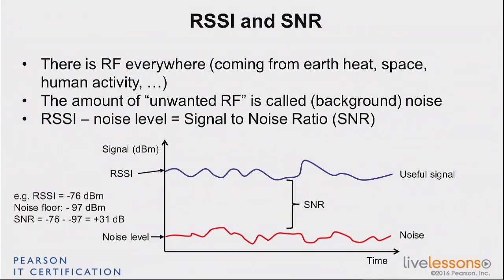For example: you have a signal received at minus 76 dBm. Your environment is not purely quiet universe, so it's not minus 101. You're receiving noise from other sources and your noise floor is at minus 97 dBm, which is fairly common in many building environments — a minus 94 to minus 95 noise floor is typical, so minus 97 is a pretty nice environment. Your SNR is simply one minus the other: minus 76 minus minus 97 equals plus 31 dB. That means your useful signal is 31 dB above the noise floor. It doesn't tell you how much energy you're receiving — you need the RSSI for that — but it tells you the signal is 31 dB higher than the noise.